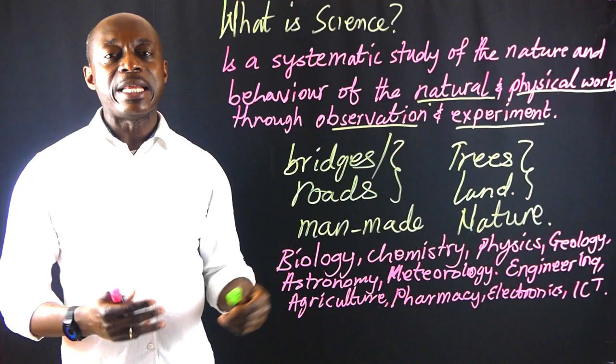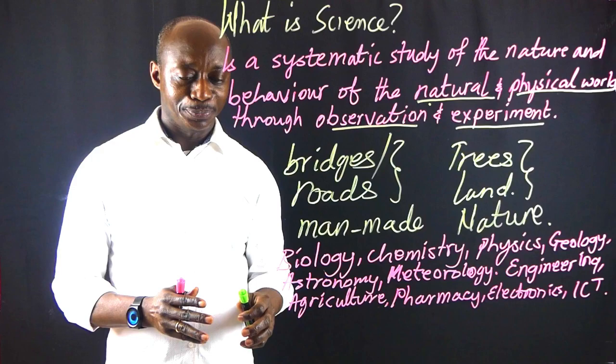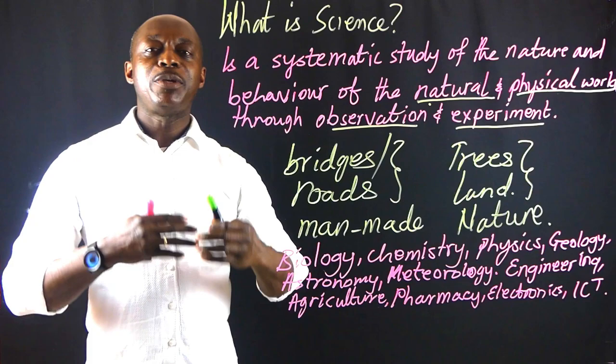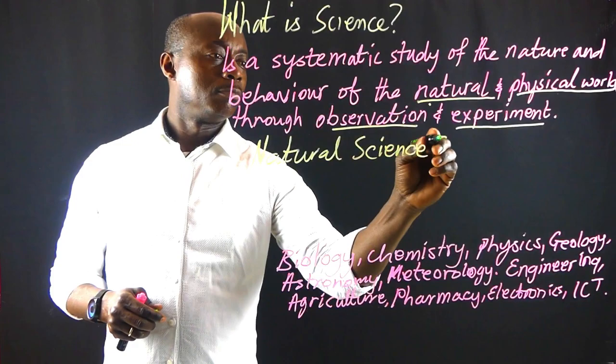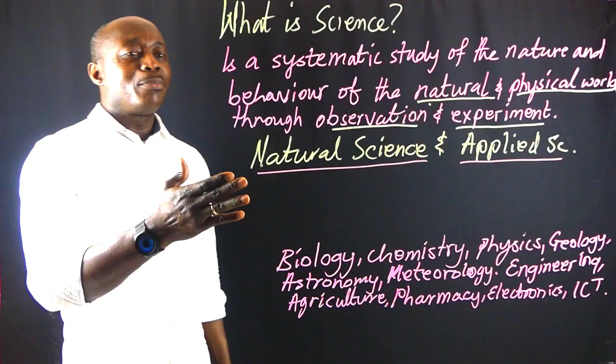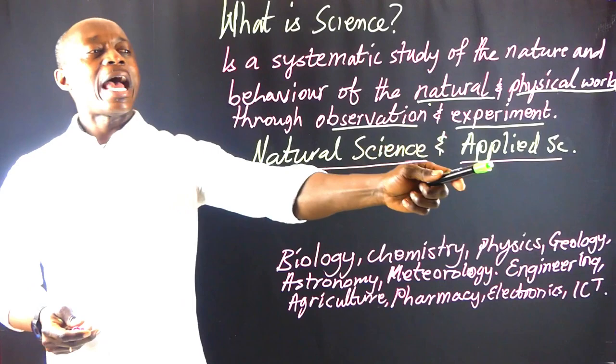However, these subjects can be grouped into two. What are they? They can be grouped into what we call natural science and applied science. What do we mean by natural science and what do we mean by applied science?